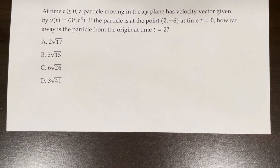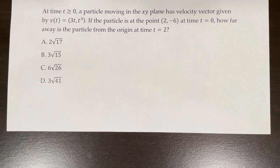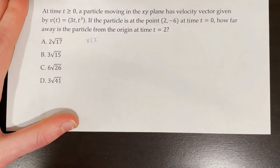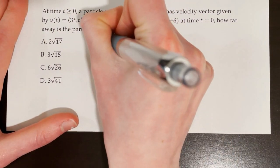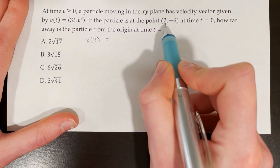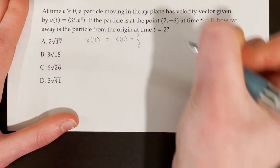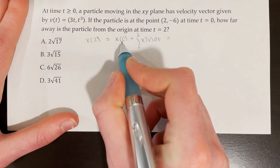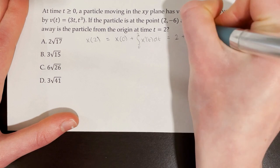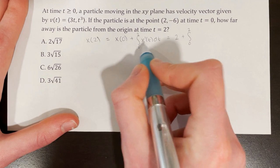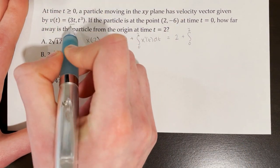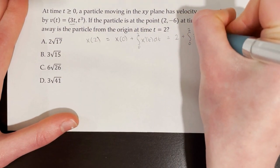At time t ≥ 0, a particle in the xy plane has velocity vector v of t equals (3t, t³). If the particle is at the point (2, −6) at time t = 0, how far away is the particle from the origin at time t = 2? To find x of 2, we use x of 2 equals x of 0 plus the integral from 0 to 2 of x prime of t dt. We know x of 0 is 2, and x prime of t is the x component of velocity, which is 3t.